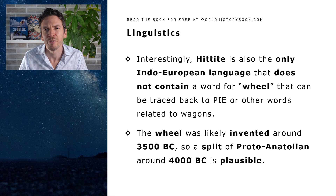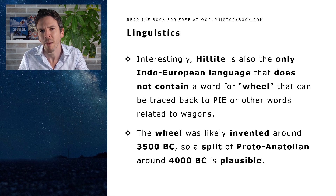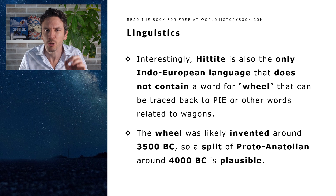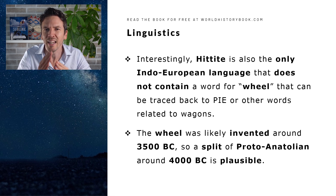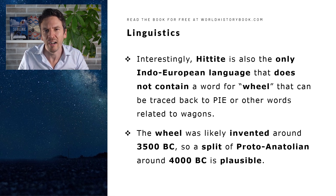Interestingly, Hittite, one of those Anatolian languages, is also the only Indo-European language that does not contain a word for wheel that can be traced back to PIE. And this also goes for other words related to wagons. Since the wheel was likely invented around 3500 BC, this matches well with the split of Proto-Anatolian around 4000 BC — meaning they split off before the invention of the wheel, and that is why the PIE word for wheel did not end up in their language.